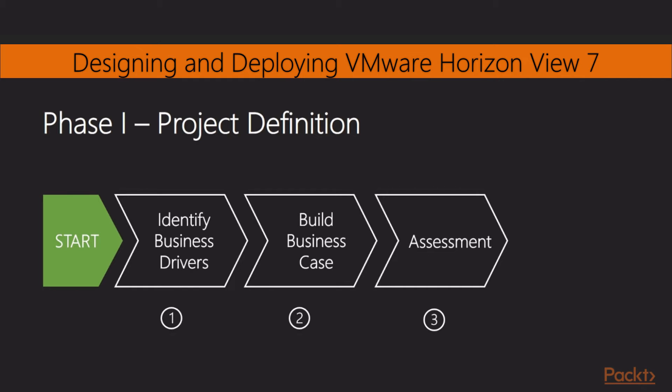Some of the key metrics we are looking for include which users are using which applications and application usage, resource consumption — whether that be CPU, memory, disk, or network — login times, applications that are unsuitable for VDI, which client operating systems are being used, and what current delivery methods you have in place. What you are ultimately looking to achieve is to create a baseline of what your environment looks like today. Then, as you move into defining the success criteria and proving the technology, you have a baseline as a reference point to demonstrate how you have improved current functionality and delivered on the business case and strategy.